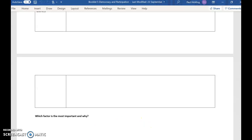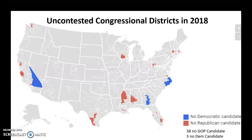I hope that's all clear. What I want to really focus on today are the midterm elections. I shall put the graph up and I'll explain what these are. Just very quickly before we do midterms, I found this little map which shows uncontested congressional districts in 2018.